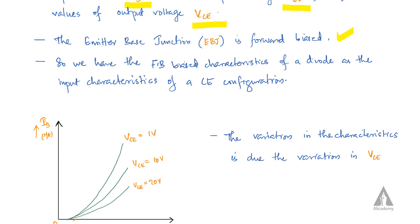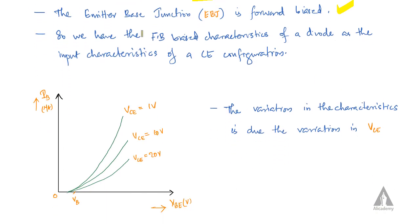Since the emitter-base junction is forward biased, the input characteristics of a common emitter configuration resemble the forward-biased V-I characteristics of a diode. The graph shape is like the forward biased VI graph of a diode.